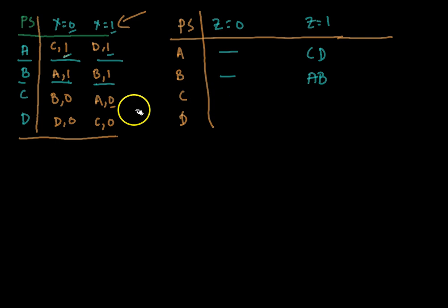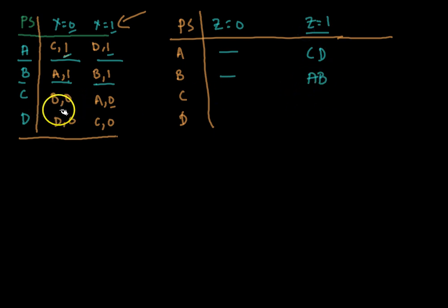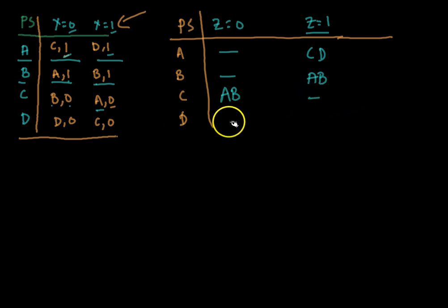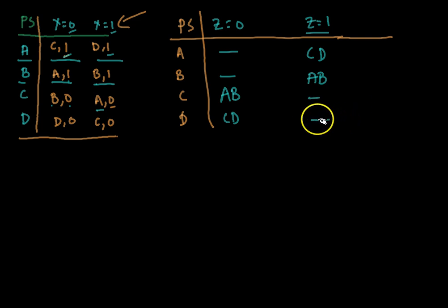For state c, both transitions produce output zero: for input zero it goes to b, for input one it goes to a — so the z equals zero entry for c is 'ab', and z equals one is blank. For state d, it also produces zero in both cases, transitioning to c and d, so the z equals zero entry for d is 'cd', and z equals one is blank. This completes the upper half of the testing table.